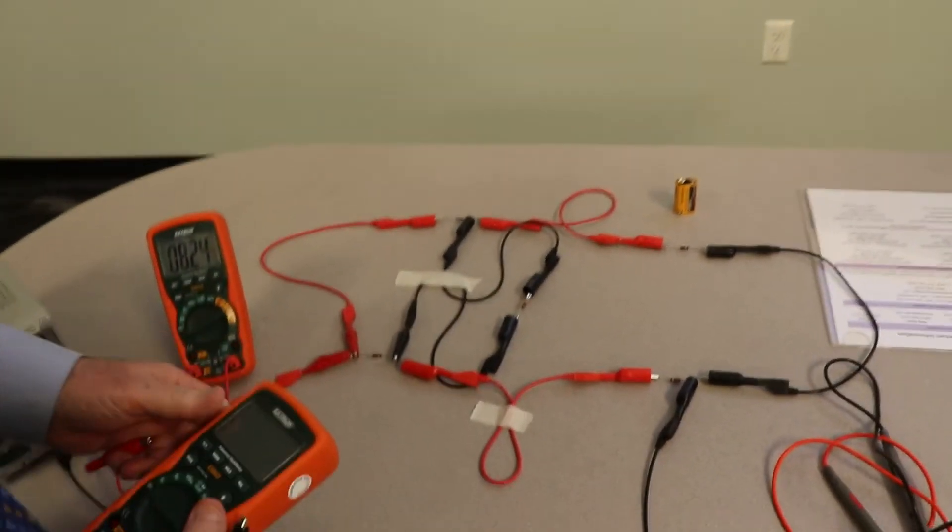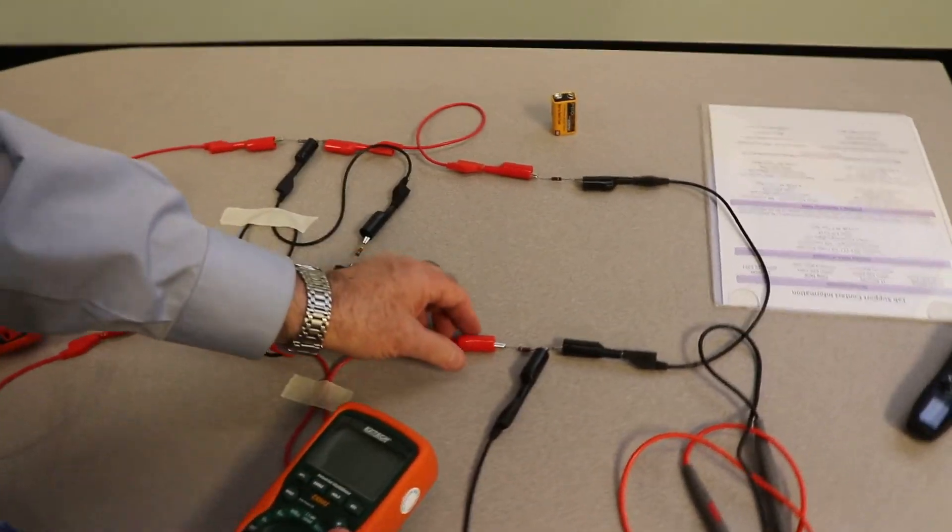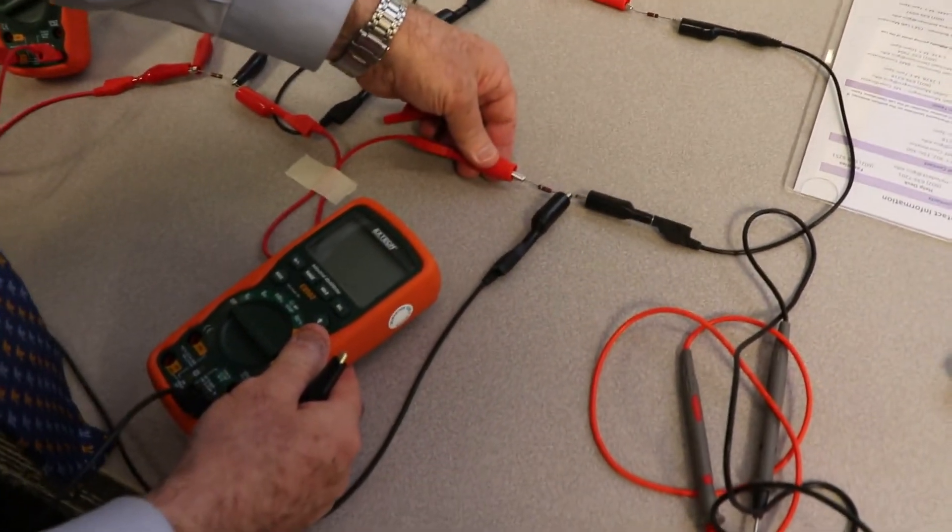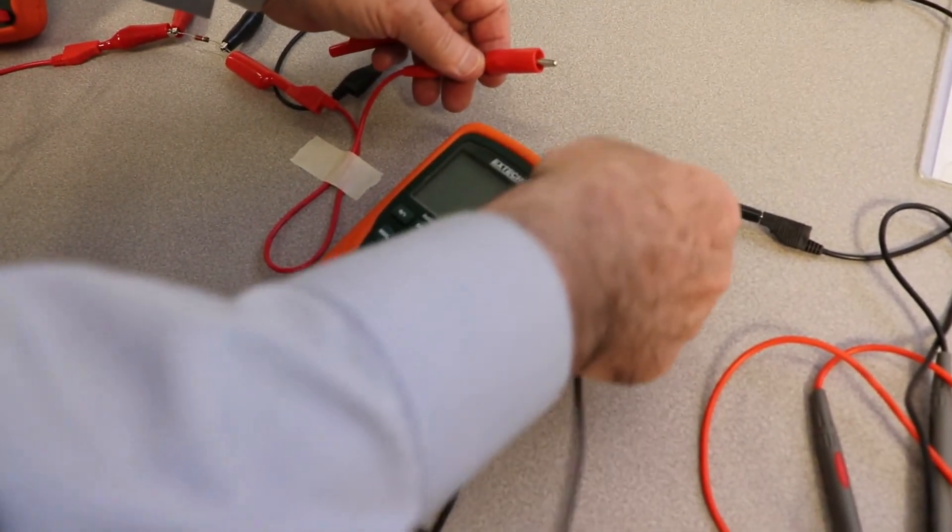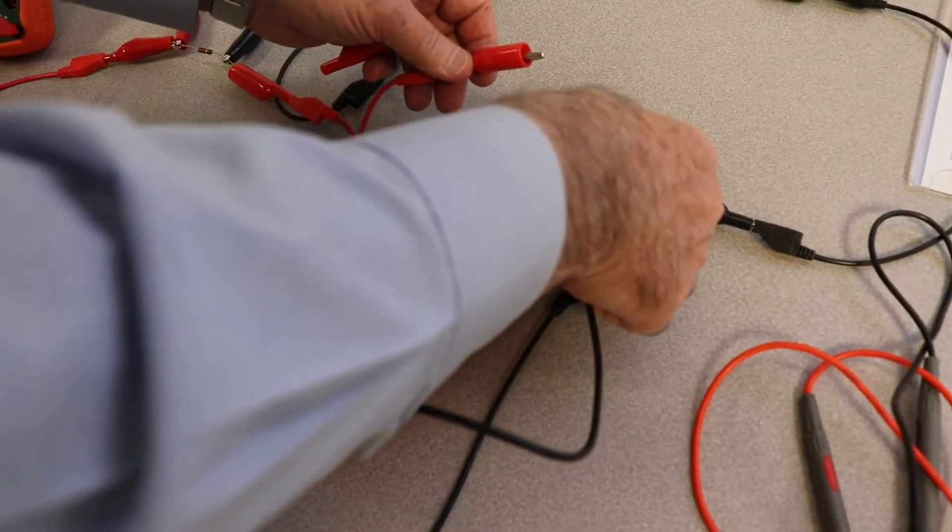And let's go ahead and we're going to measure the current going right into number two right there. So you have to open the circuit right there like that. And I'm going to hook the black lead right there like that.